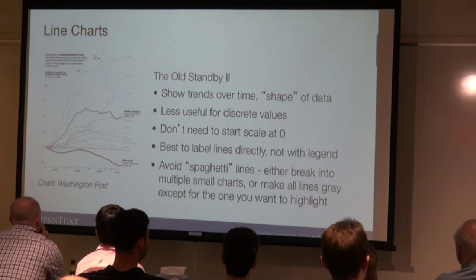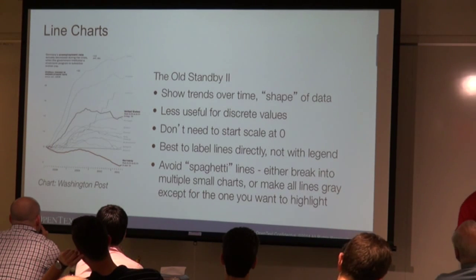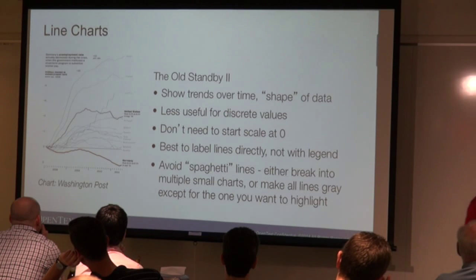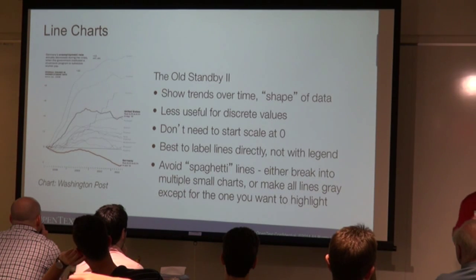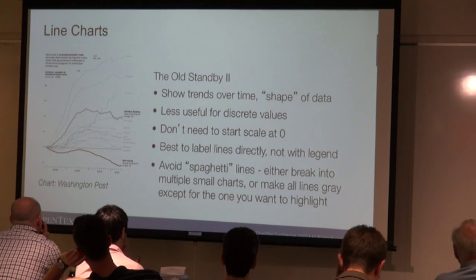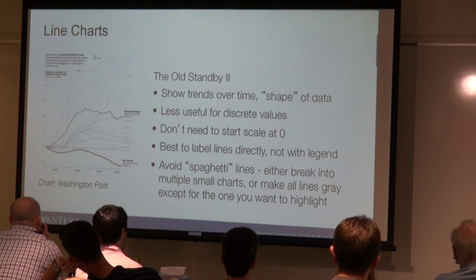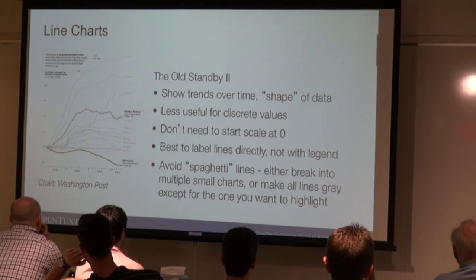Line charts are another old standby. They show trends over time. They're less useful for discrete values — what's important is the trend, not a specific value. In this case you don't need to start the scale at zero. Best to label lines directly rather than with a legend.